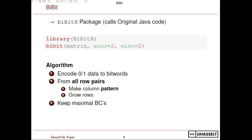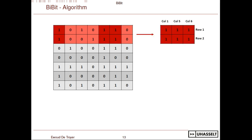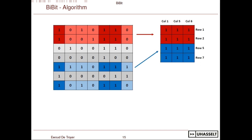The way the BBit algorithm works is as follows. It first encodes all the 0-1 data into bit words, then starts the algorithm from all row pairs. For example, starting from the first two rows, we see where both rows have ones — in this case, columns one, five, and six. In the second step, we find what other rows fit this column pattern of columns one, five, and six, and add those to the bi-cluster. That's the resulting bi-cluster.